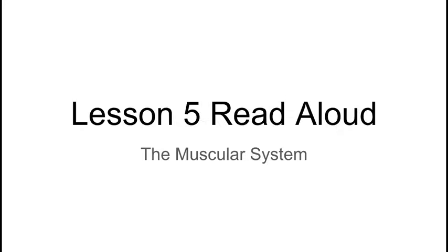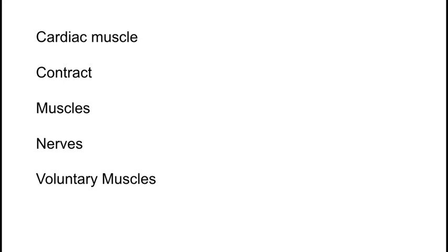Some words that you're going to hear in today's read aloud are cardiac muscle. A cardiac muscle is muscular tissue of the heart that contracts rhythmically and continuously. To contract means to bring together, to shorten, or to tighten.